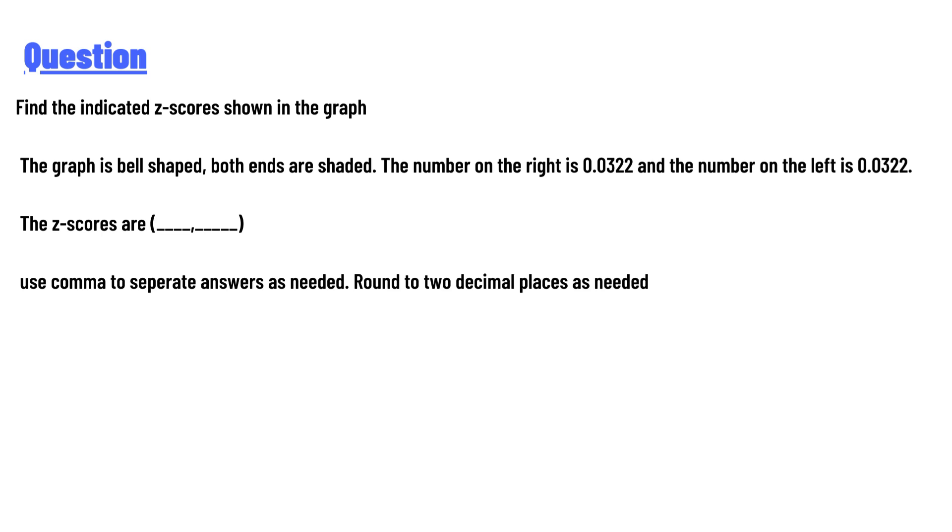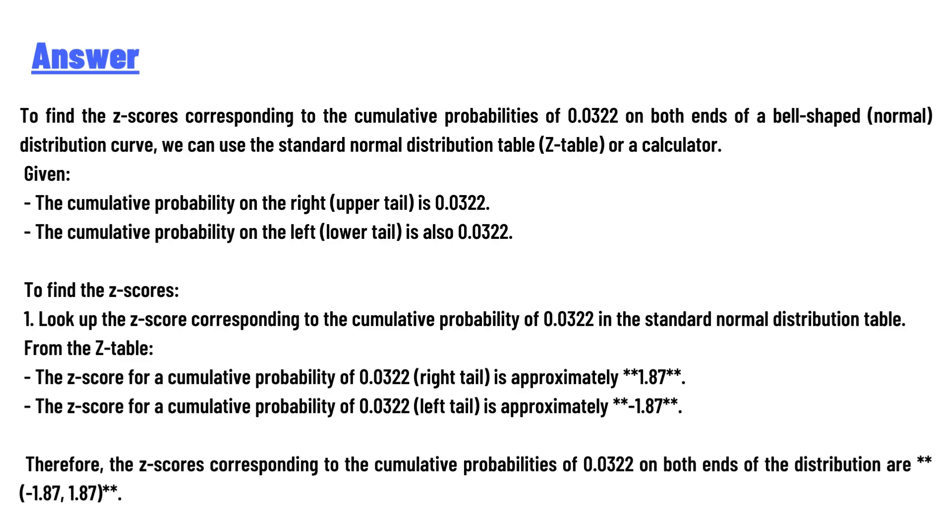The answer of the question is: to find the z-scores corresponding to the cumulative probabilities of 0.0322 on both ends of the bell-shaped distribution curve, we can use the standard normal distribution table or a calculator. Given: the cumulative probability on the right (upper tail) is 0.0322, the cumulative probability on the left (lower tail) is also 0.0322.